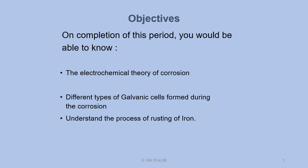Good morning. The objectives of this video lesson: after completion of this period, you would be able to know the electrochemical theory of corrosion, different types of galvanic cells formed during the corrosion, and understand the process of rusting of iron.